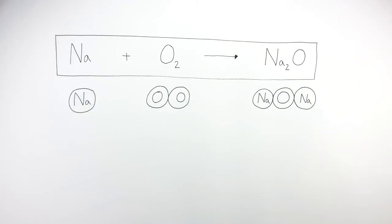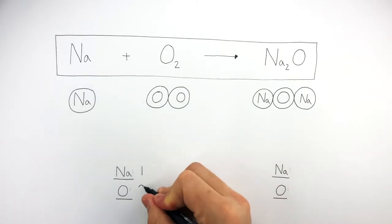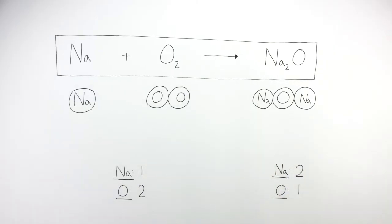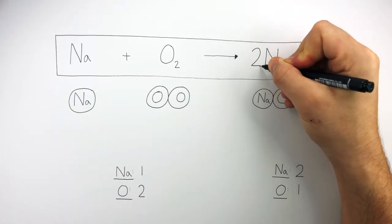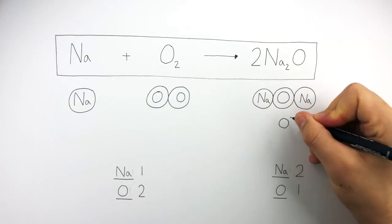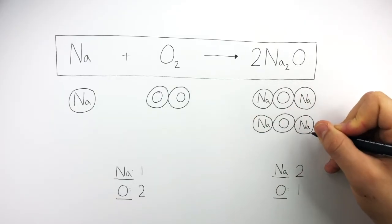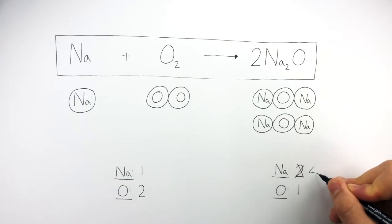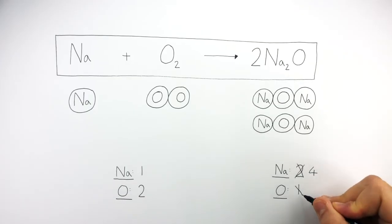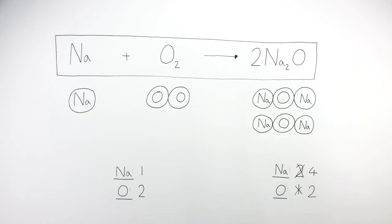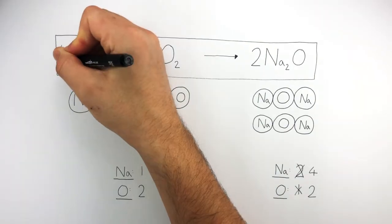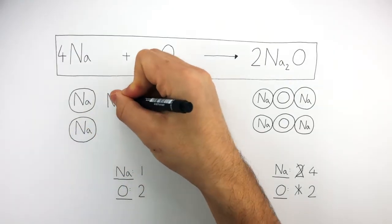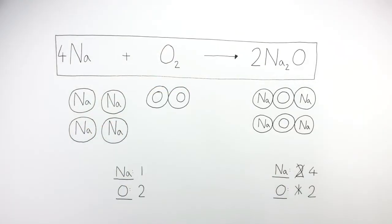Underneath we write out the elements and the number of each atom on both sides of the equation. We balance the equation by writing a big two in front of the Na₂O, so now there are two sodium oxide compounds. In total there are now four sodium atoms and two oxygen atoms on the right. We then put a big four in front of the Na on the left, so there are now four sodium atoms on the left. Underneath we write a four, so we can now see the symbol equation is balanced.